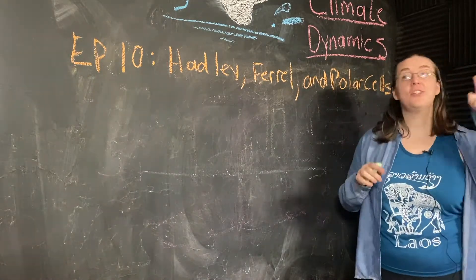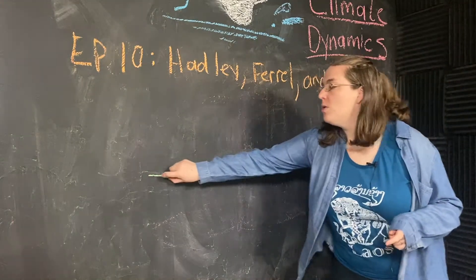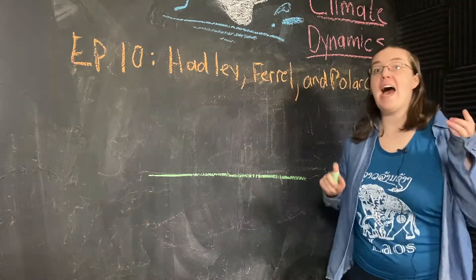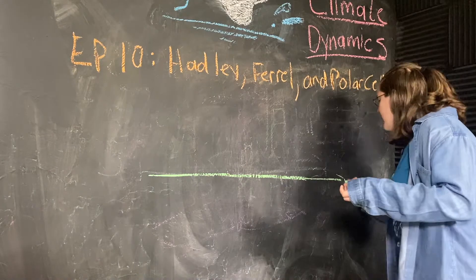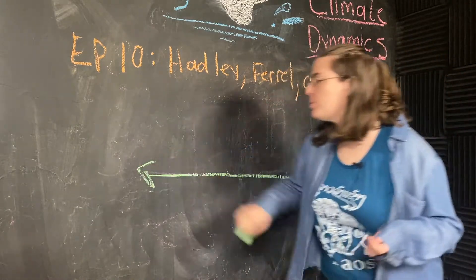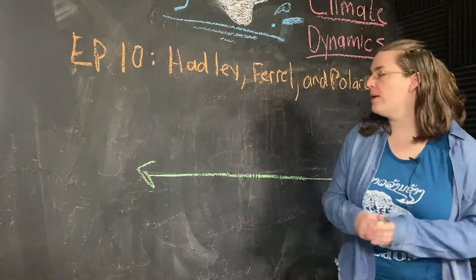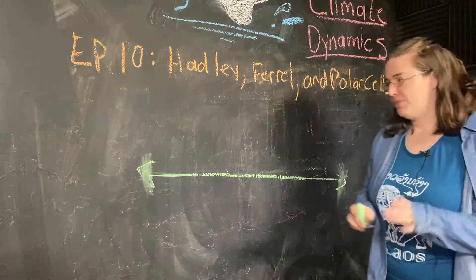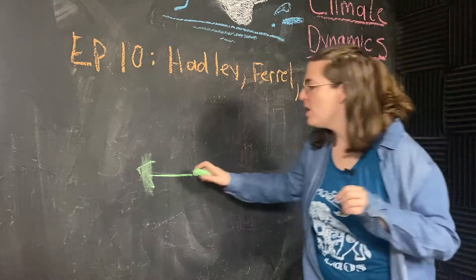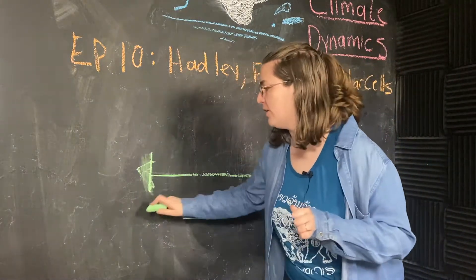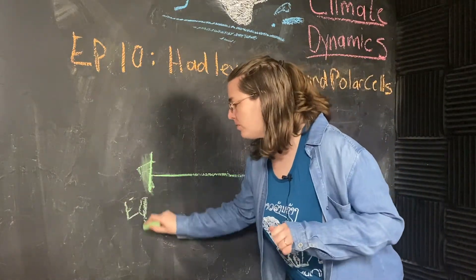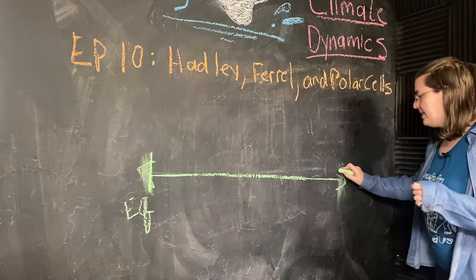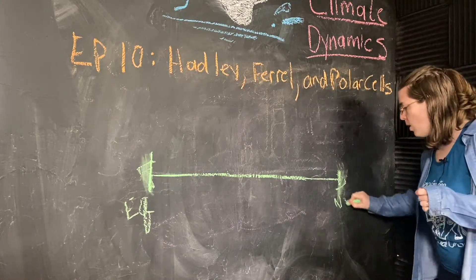So, Hadley, Ferrel, and Polar cells. In the last video, we learned about the Hadley cell, so let's review that briefly. Here is planet Earth. We're just going to think about the northern hemisphere. Here is the equator, and here is the North Pole. So this will be about 30 degrees north, and that is about 60 degrees north.